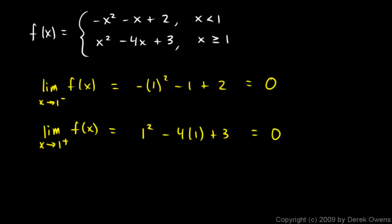So they're approaching the same value. So the left and right limits are both equal to 0. So we can say the limit as x approaches 1 of f of x is equal to 0.